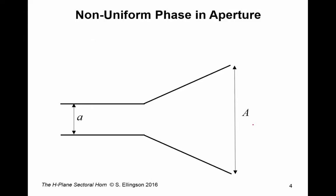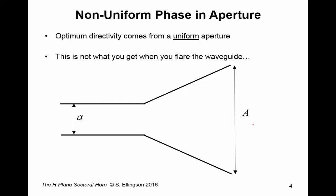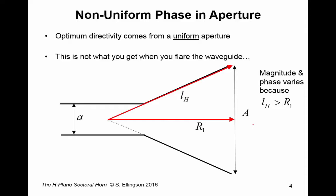Now, the problem with doing this is non-uniform phase in the aperture. And the issue is this. Optimum directivity comes from a uniform aperture. To get the best possible directivity out of an aperture, we know that we would like uniform phase, constant phase over the aperture. But that's not what you get, necessarily, when you flare the waveguide.